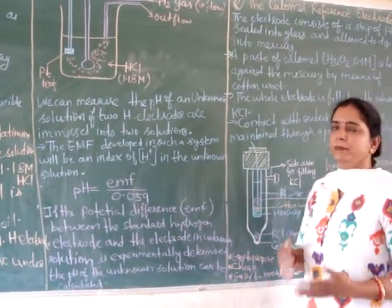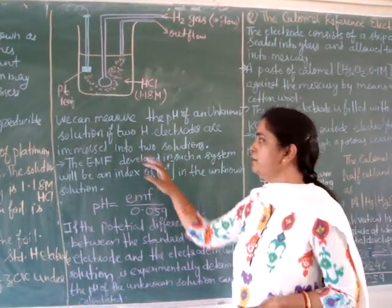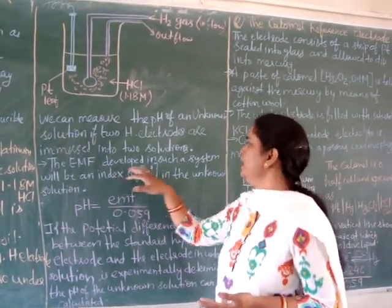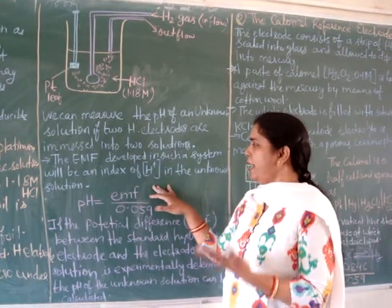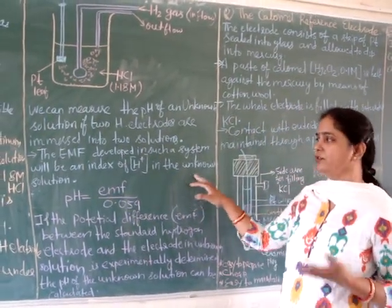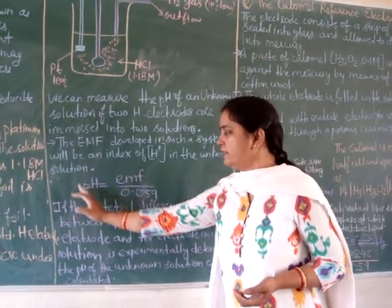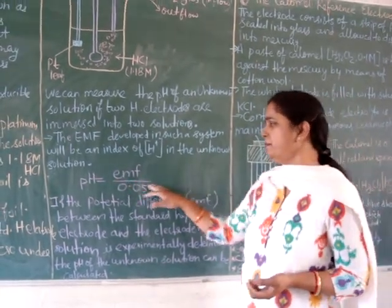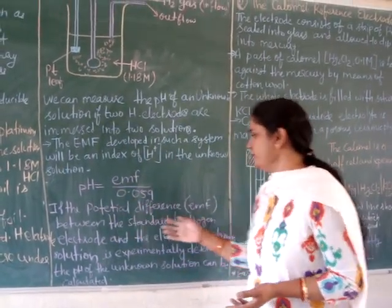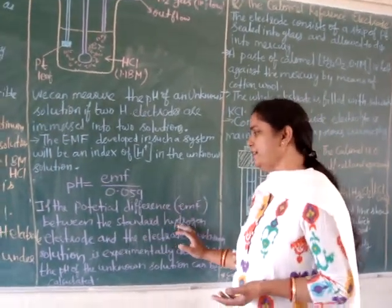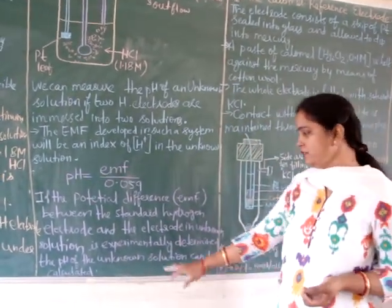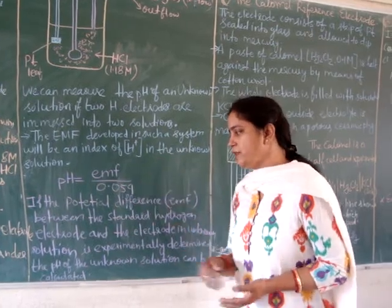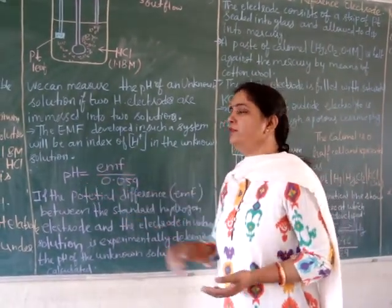We can measure the pH of any unknown solution if two hydrogen electrodes are immersed into two solutions. The EMF, or electromotive force, in such a system will be an index of hydrogen ion concentration in the unknown solution. We can calculate the pH of any unknown solution with the help of this formula: pH = EMF generated / 0.059. If the potential difference between the standard hydrogen electrode and the electrode in the unknown solution is experimentally determined, then we can know the pH of any unknown solution.